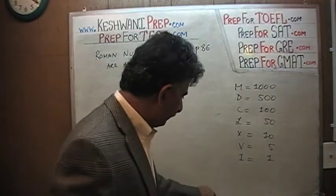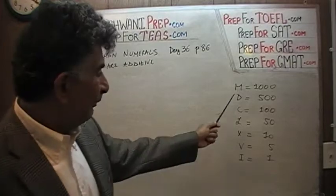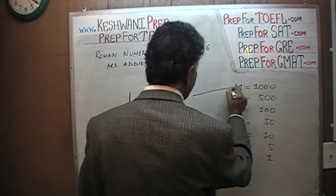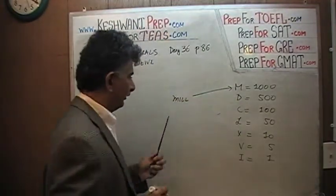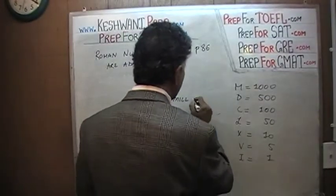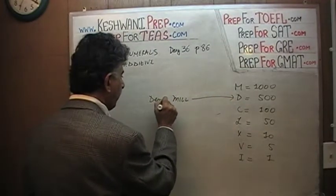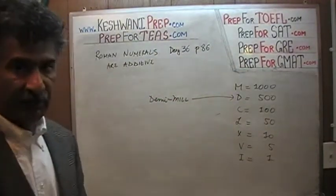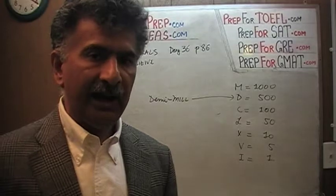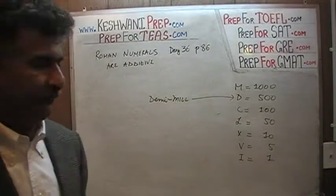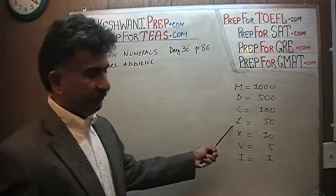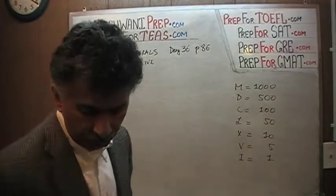Recapitulation of what we learned yesterday — these are the basic symbols we have to know. M stands for 1000; M comes from the word 'mill,' which means thousand. Mill does not mean million. D comes from 'demi mill' — that's how they say 500. The Romans referred to 500 as half a thousand; demi means half, hence the letter D. Then we have C for century, which is 100. L for 50. X, V, and I — of course we know those.